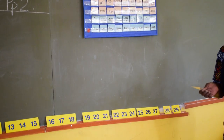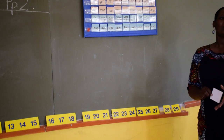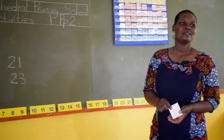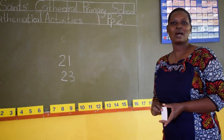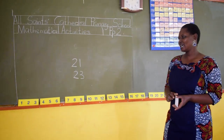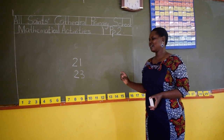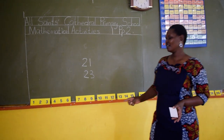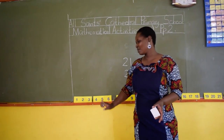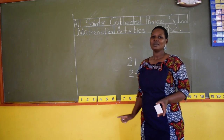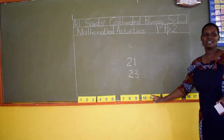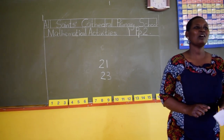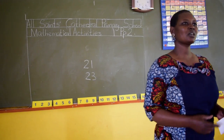Clap for yourselves. Now you can open your books on page 16 and do the work that is there. You are going to write the numbers after. Like I said before, the number that comes after number 1 is number 2, and the number that comes after number 10 is number 11. I wish you a wonderful day. Now prepare yourselves and go for a break. Thank you.